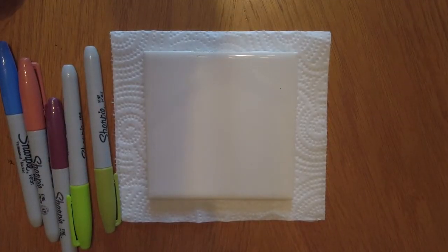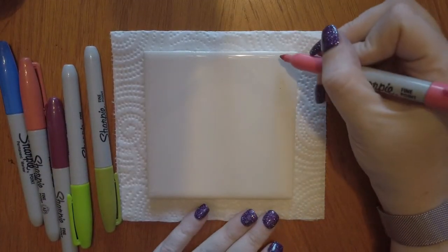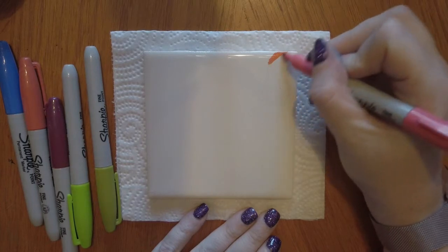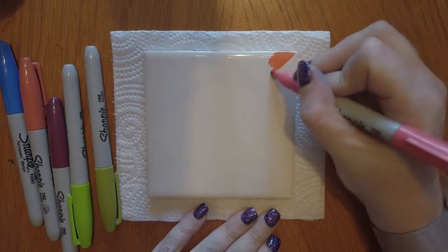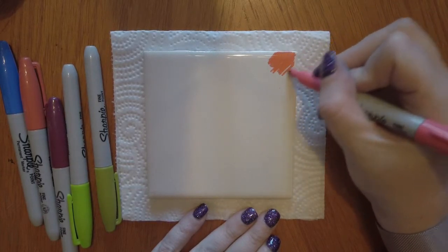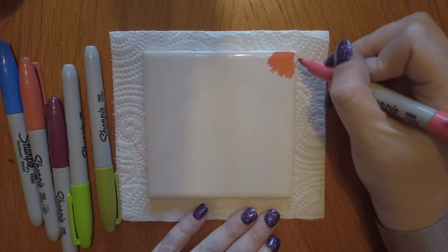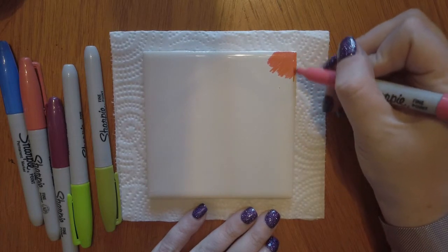To get started, clean off your tile then color them in with your Sharpie. Cover the whole tile with marker but don't worry if there's white showing and definitely don't worry if it's messy or if the colors overlap. It won't make any difference in the end.